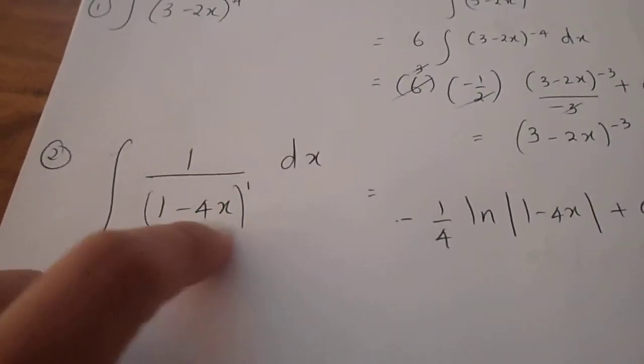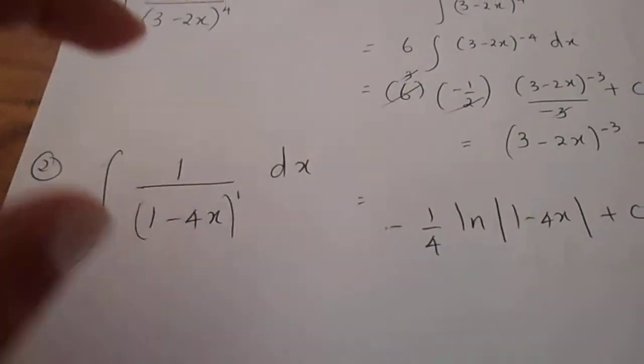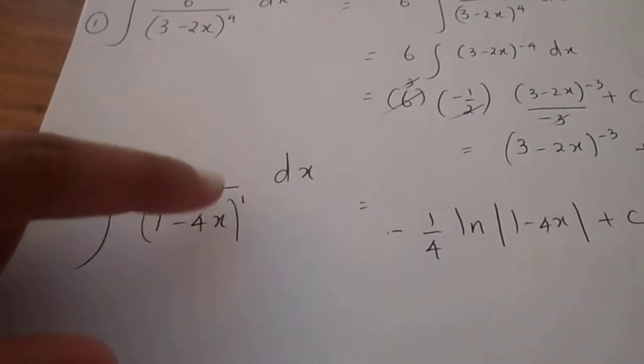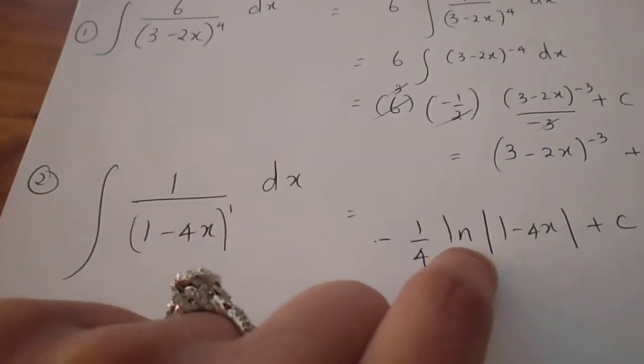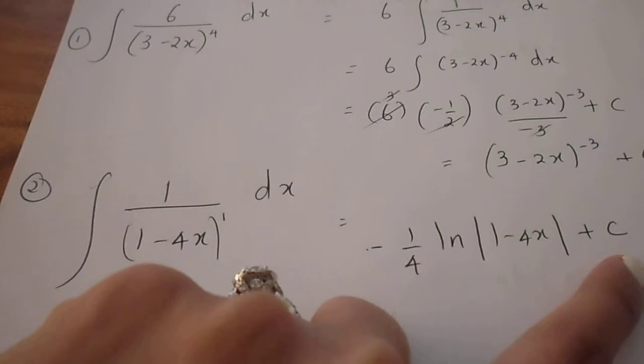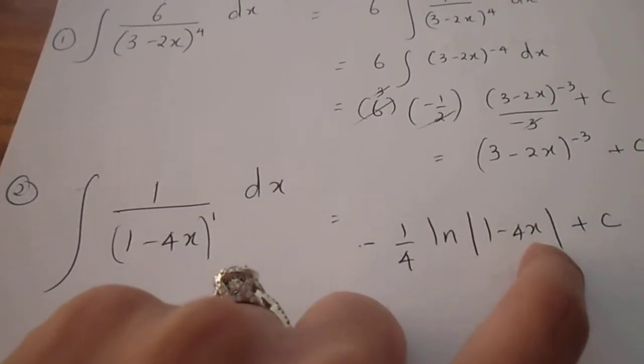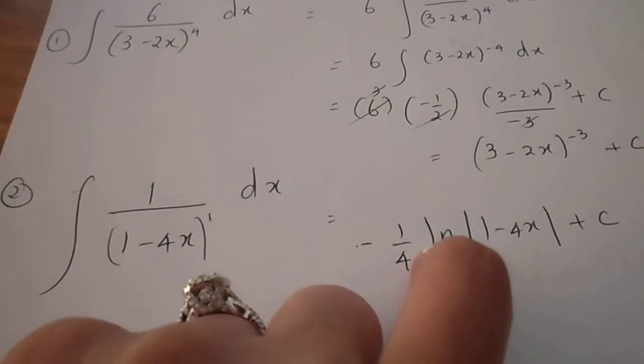The overall integral of 1 over an algebraic function is ln of 1 minus 4x plus c. So the integral of 1 over 1 minus 4x is ln of 1 minus 4x plus c. Don't fail to modulate your function here, 1 minus 4x, because it is an ln function.